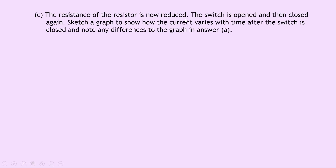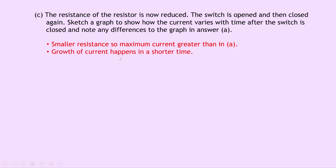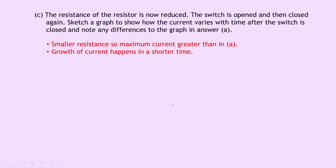Part C then says the resistance of the resistor is now reduced. The switch is opened and then closed again. Sketch a graph to show how the current varies with time after the switch is closed and note any differences to the graph in answer A. A smaller resistance will mean a greater maximum current than in part A, and because of the smaller resistance, the growth of current will happen in a shorter time. So the new curve shows a greater maximum current above Vs over R, also reaching that maximum current in a shorter time than part A.